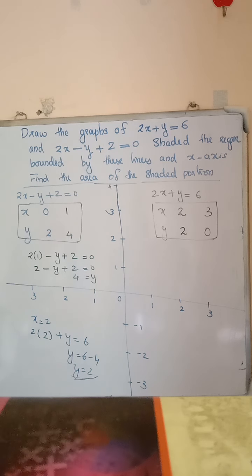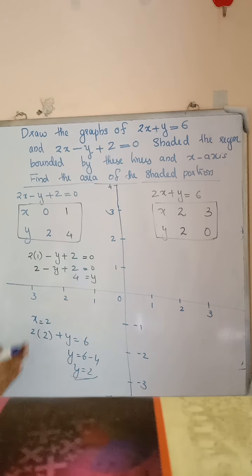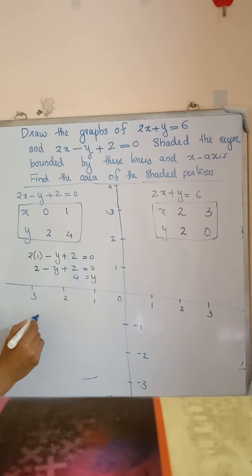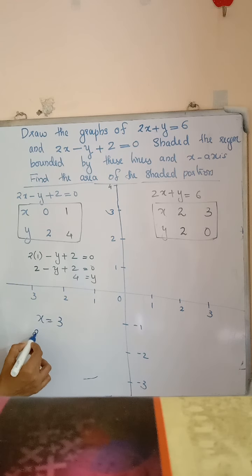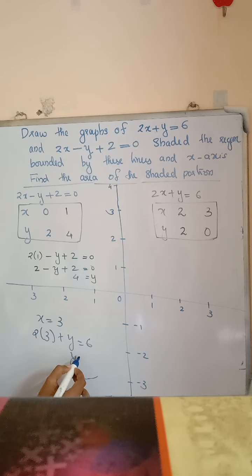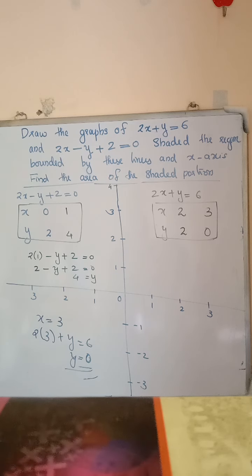You may choose x as 1, x as 0, or x as minus 1. When x is equal to 3, we get 2 into 3 plus y is equal to 6. Therefore y is equal to 6 minus 6, that is 0. So we get the two points: (2, 2) and (3, 0).